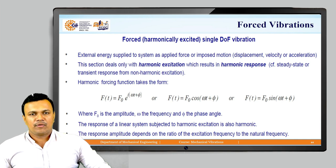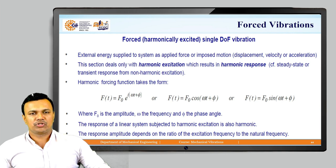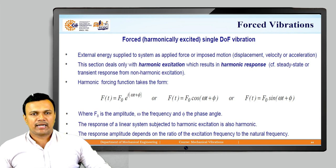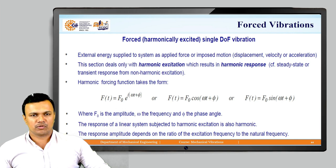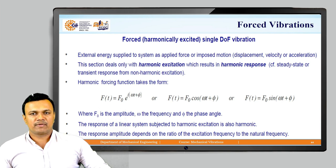Earlier we were writing down the equation of motion as mx-double-dot plus cx-dot plus kx is equal to 0. Now, that 0 from the right-hand side is going to be replaced with some impressed, applied, or imposed force. The external energy supplied to the system can be called an applied force or imposed motion, and it can be in terms of displacement, velocity, or acceleration.